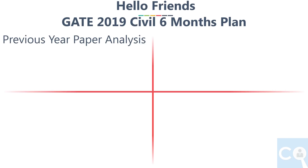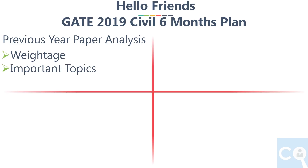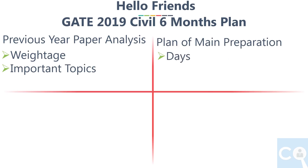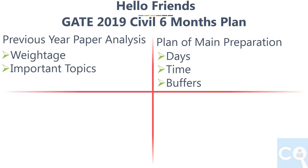Section 1 is previous year paper analysis, by which we will know which subject has the highest weightage and how much time to give to each subject. Section 2 is the plan of main preparation — we will see how many days to give for each subject and the distribution of timings. We will also see how to include buffers.